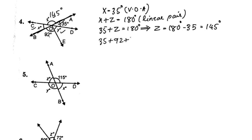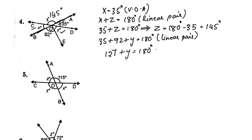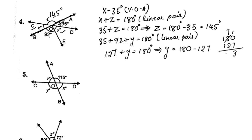35 plus 92 plus y is equal to 180 degrees — linear pair. 35 plus 92 is 127, plus y is equal to 180 degrees. Y is equal to 180 minus 127. 180 minus 127 is 53 degrees. Y is equal to 53 degrees.